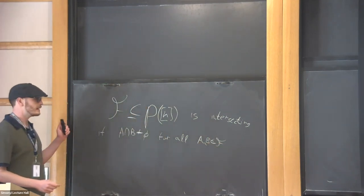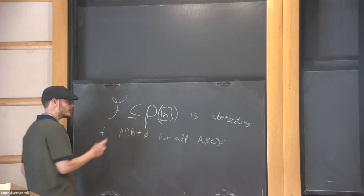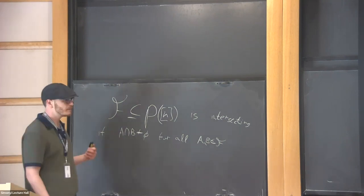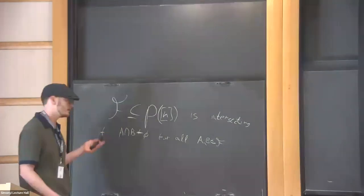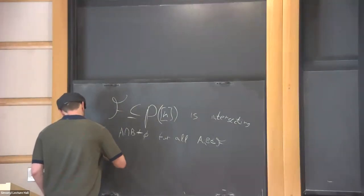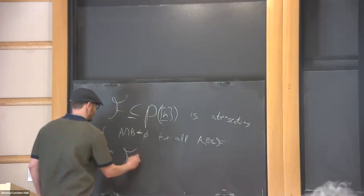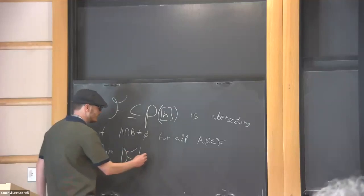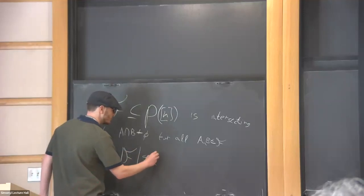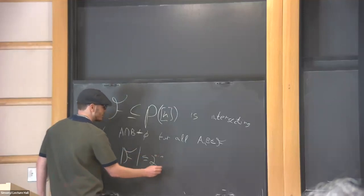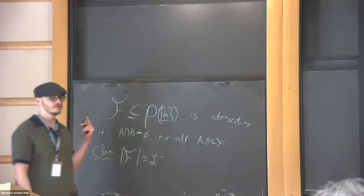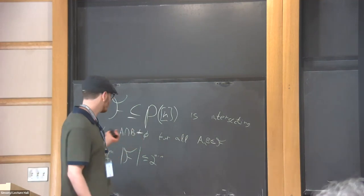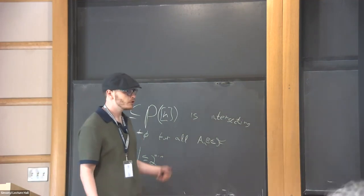This is an intersecting family, and the corresponding extremal problem is to determine the largest intersecting family — and here it's easy. If F is intersecting, its size should be at most 2 to the n minus 1, because for each set in F its complement is not in F, so for each pair of a set and its complement we can only choose one.